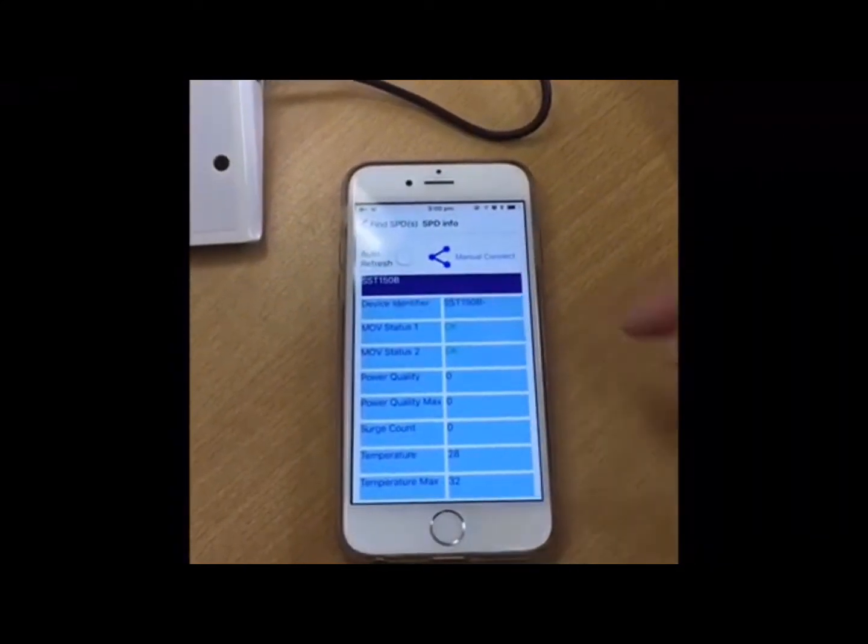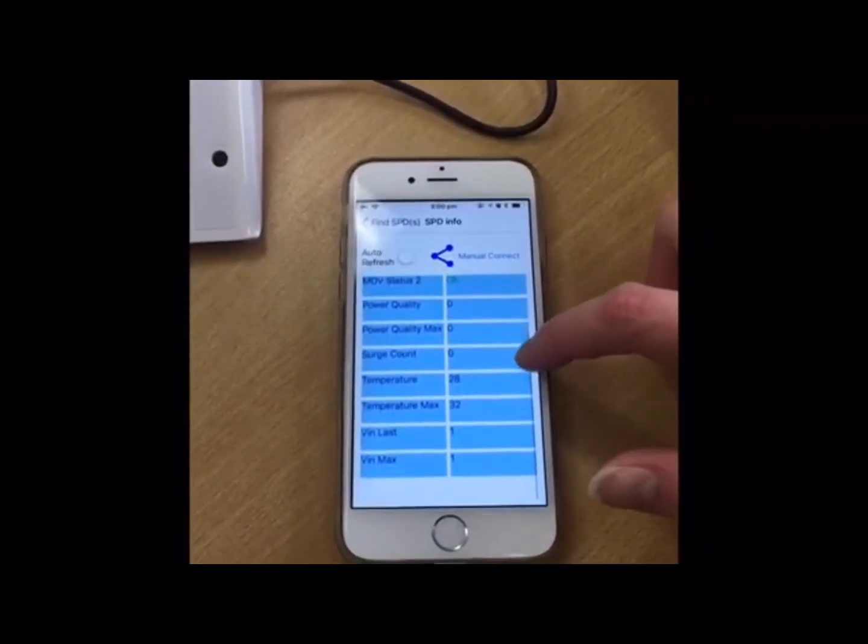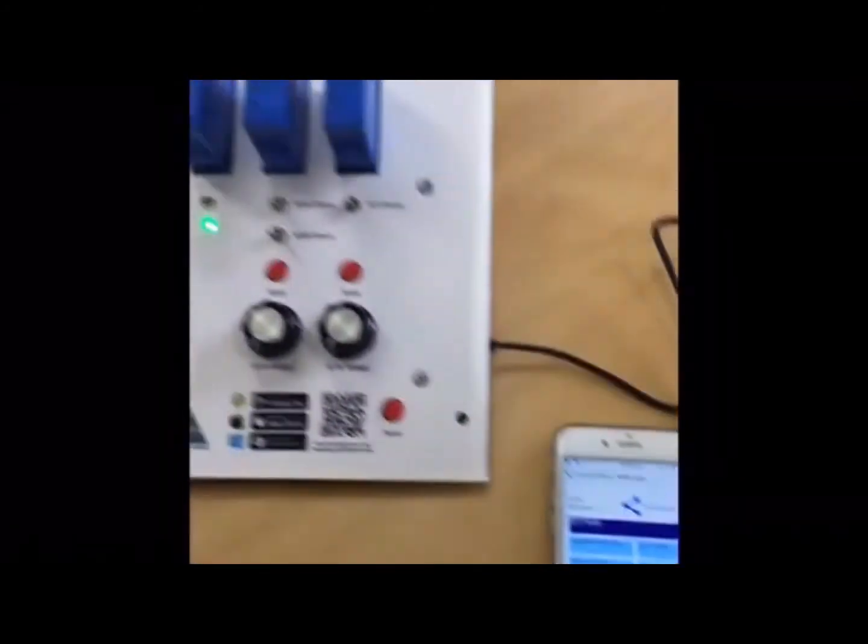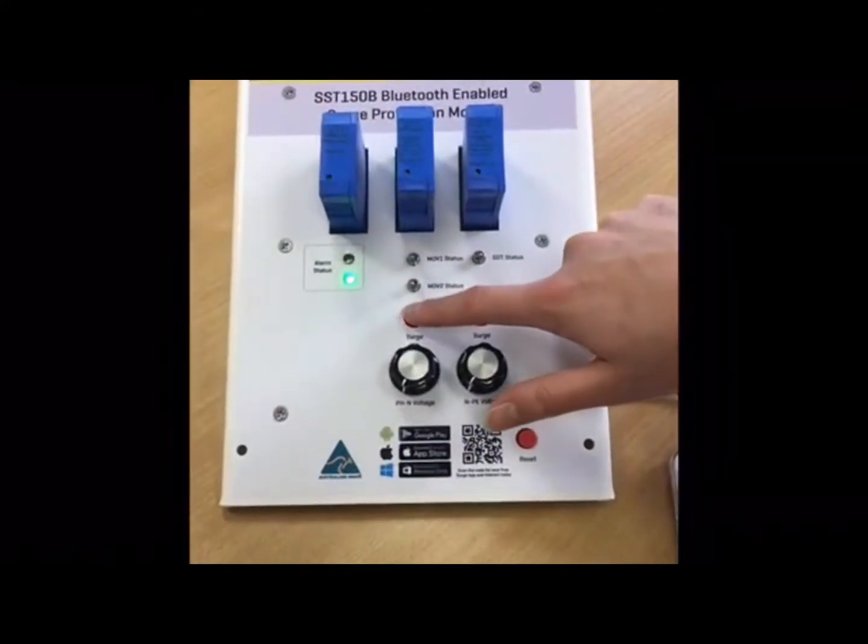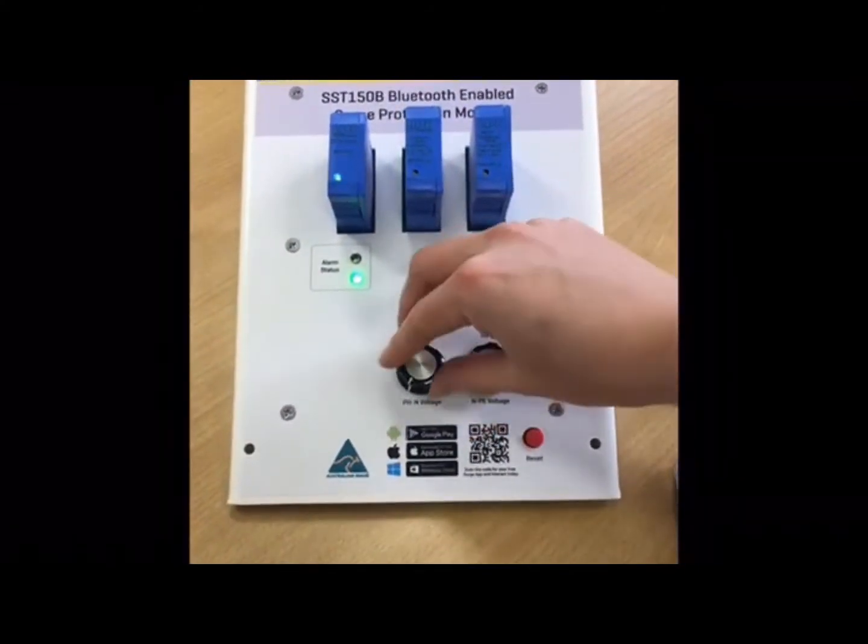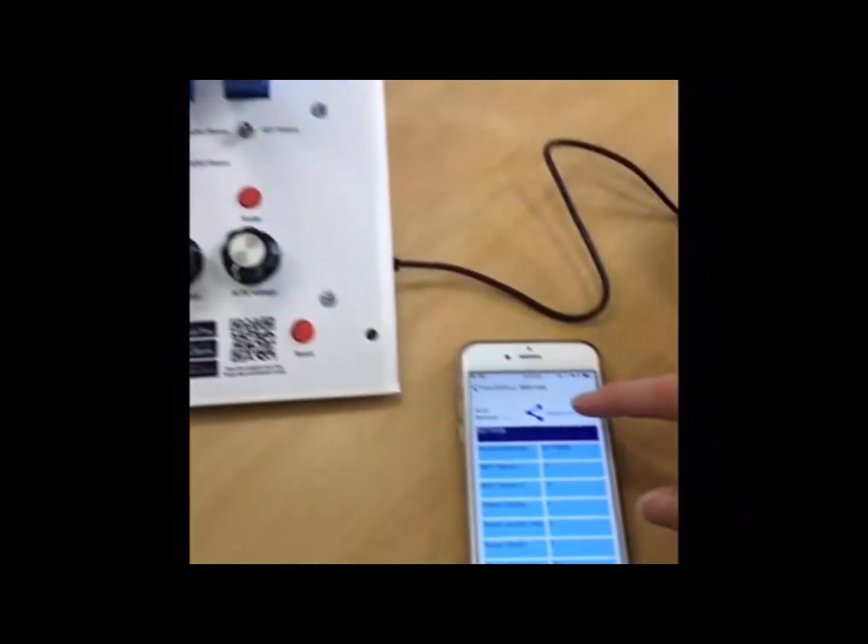First, we will press the search button on the demo panel to simulate a transient pulse. We will also rotate the phase to neutral voltage dial to change the live voltage. Both of these changes can be seen in the app.